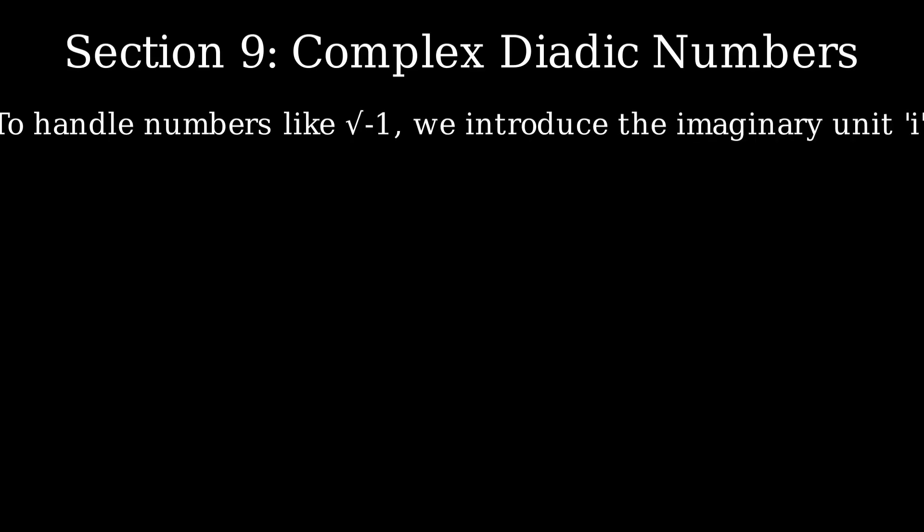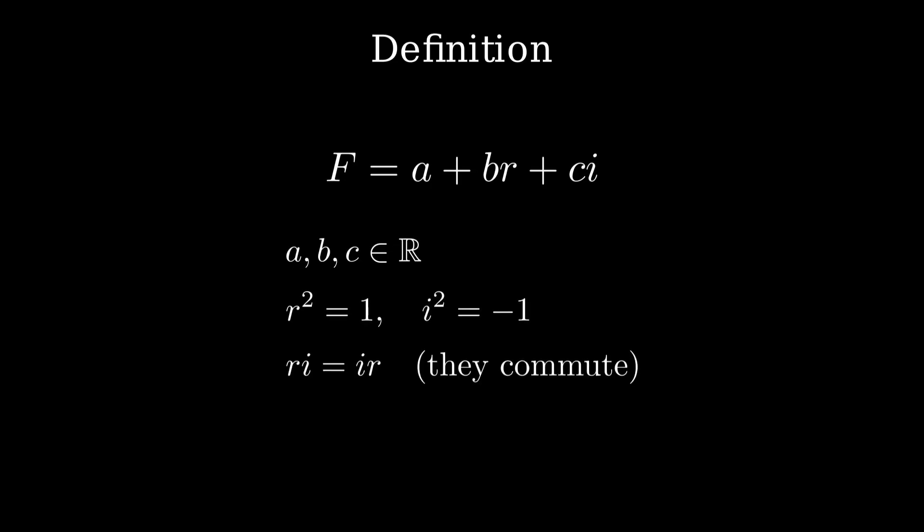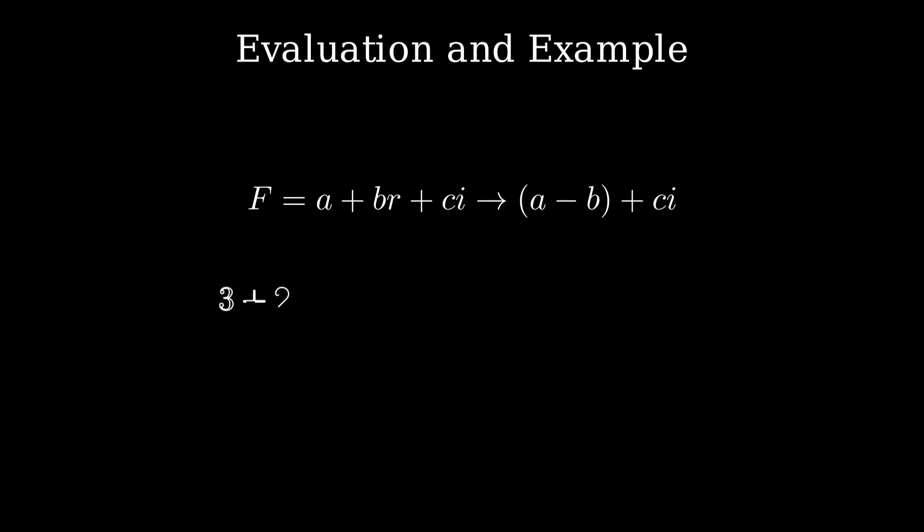To handle numbers like the square root of negative 1, we extend the dyadic system by introducing the imaginary unit i. This leads us to complex dyadic numbers. A complex dyadic number is defined as a plus b times r plus c times i, where a, b, and c are real numbers. In this system, r squared equals 1, i squared equals negative 1, and importantly, r and i commute, meaning their order doesn't matter. To evaluate such numbers, we follow the usual dyadic rule. Replace r with negative 1. So, a plus br plus ci becomes a minus b plus ci.